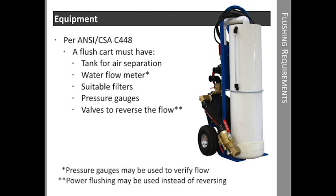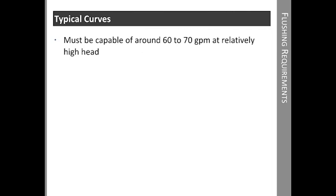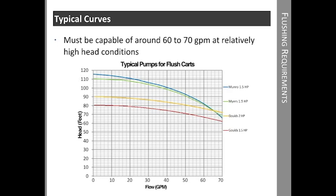In some cases, if the loop is very close to being purged of air, reversing the flow can actually end up being a step backwards. A flush cart should include a pump capable of around 60 to 70 GPM at relatively high head to purge residential and light commercial loops. Depending upon loop design, a flush cart like this can even purge larger loops if valves allow portions of the loop to be purged separately. Here's a chart showing typical one and a half and two horsepower pumps used in the industry. The GeoFlow flush cart uses the Monroe pump, which has high head and flow capabilities but can also operate on a 15 amp breaker at 115 volts.